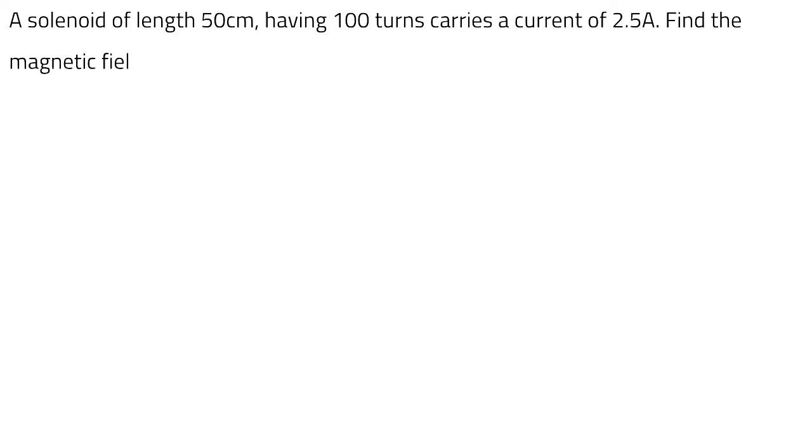Today we have a question from NEET 2021. The question states that a solenoid of length 50 centimeters having 100 turns carries a current of 2.5 amperes. Find the magnetic field B at the center of the solenoid, given that μ₀ equals 4π × 10⁻⁷ SI units.